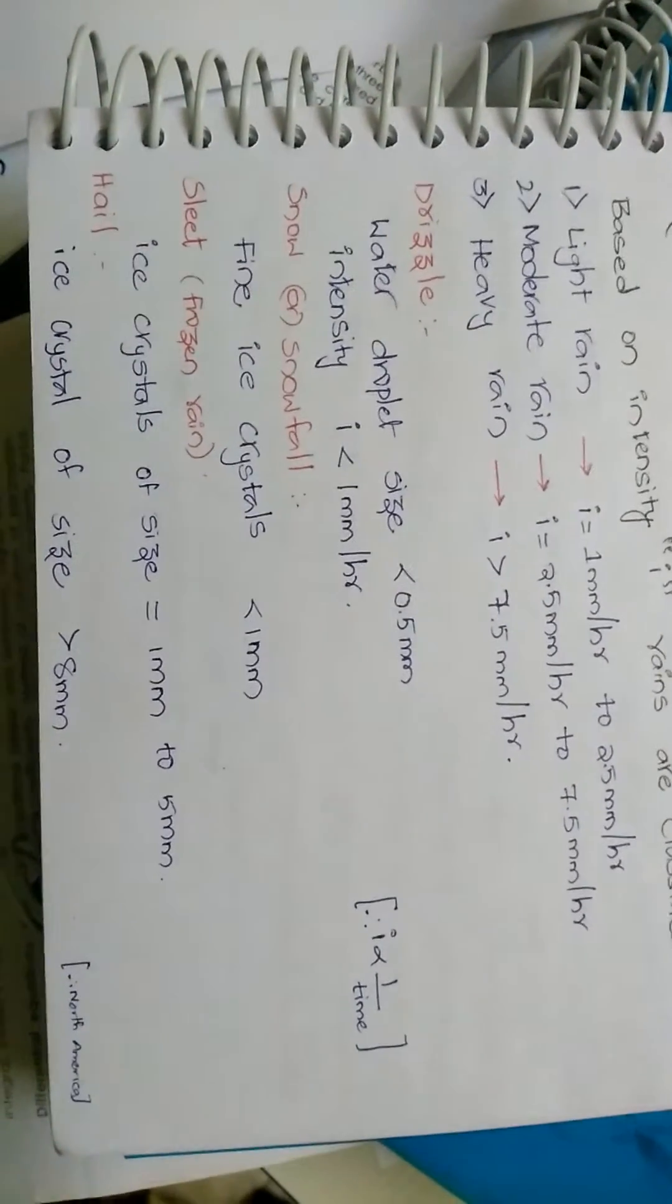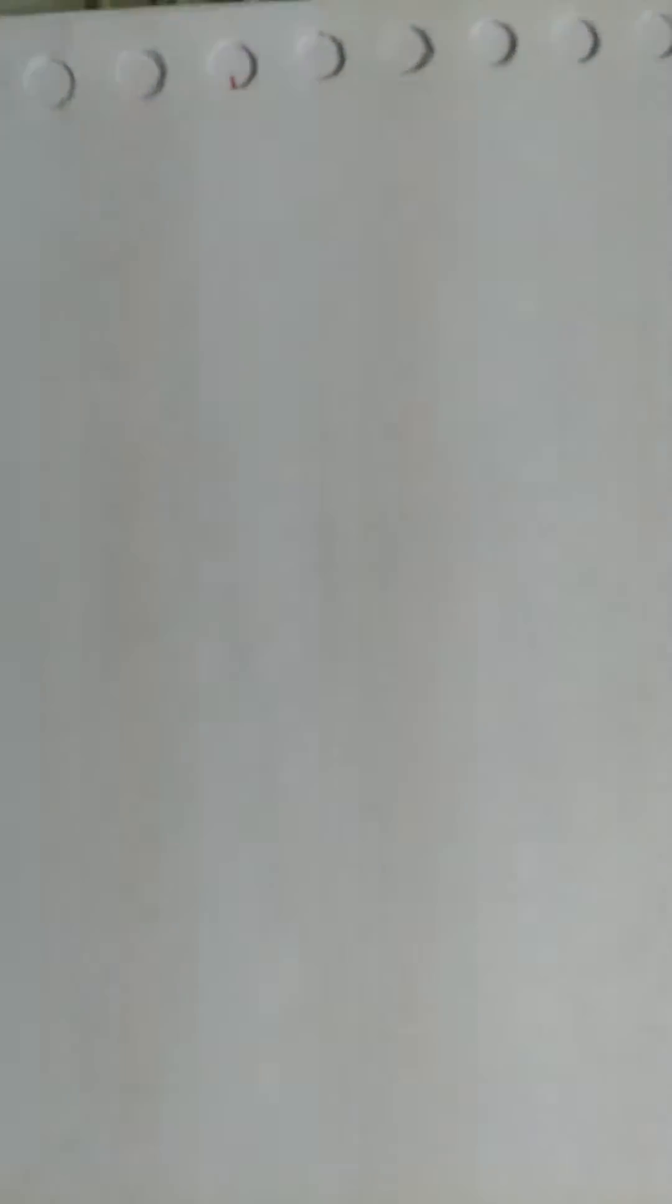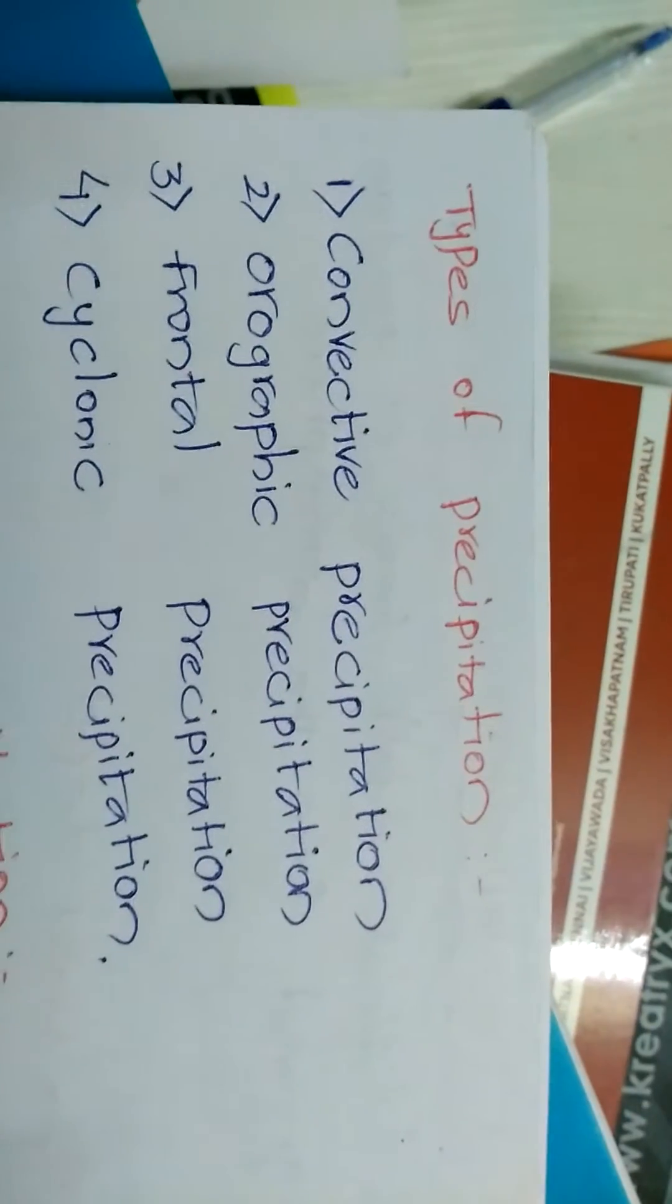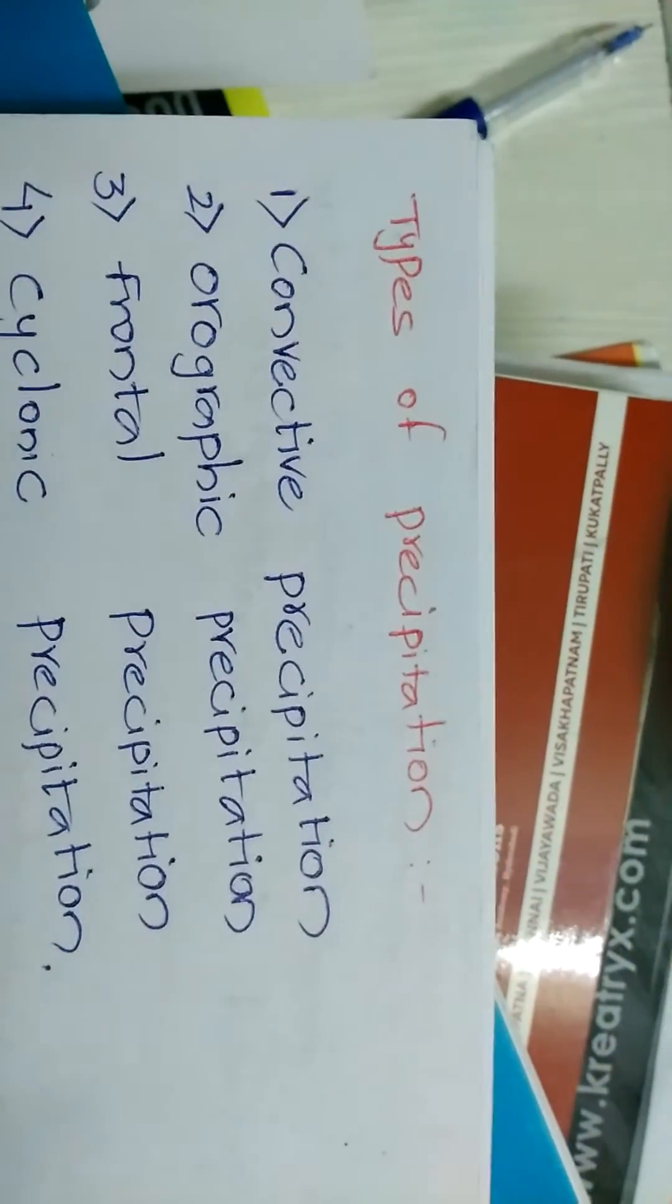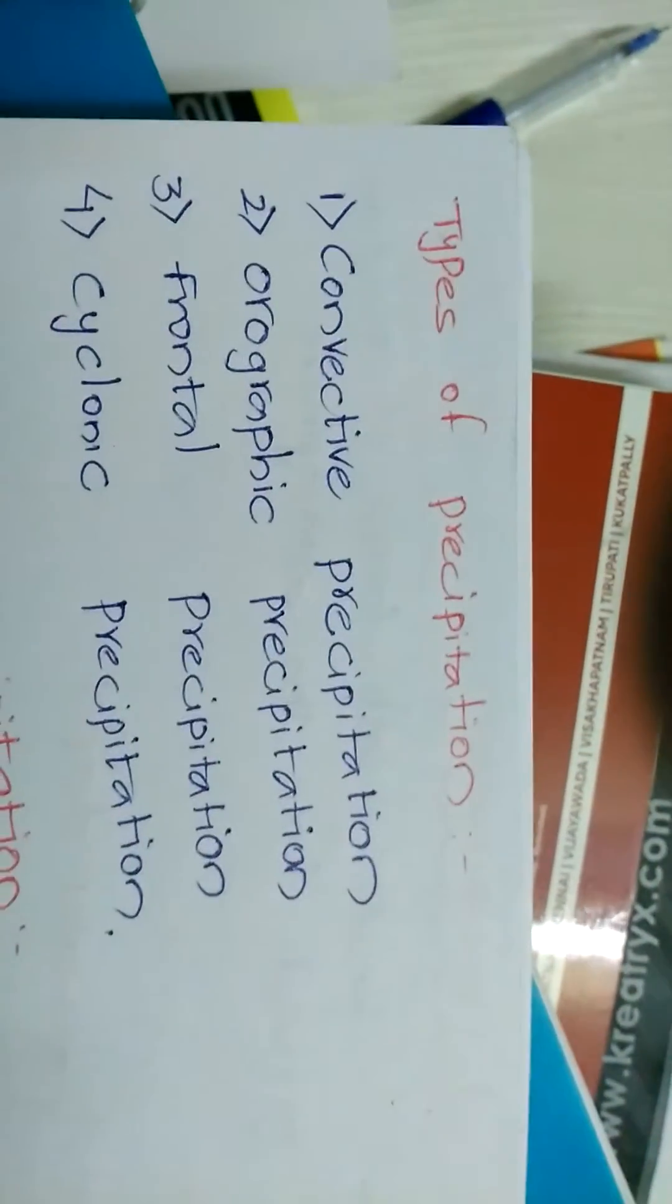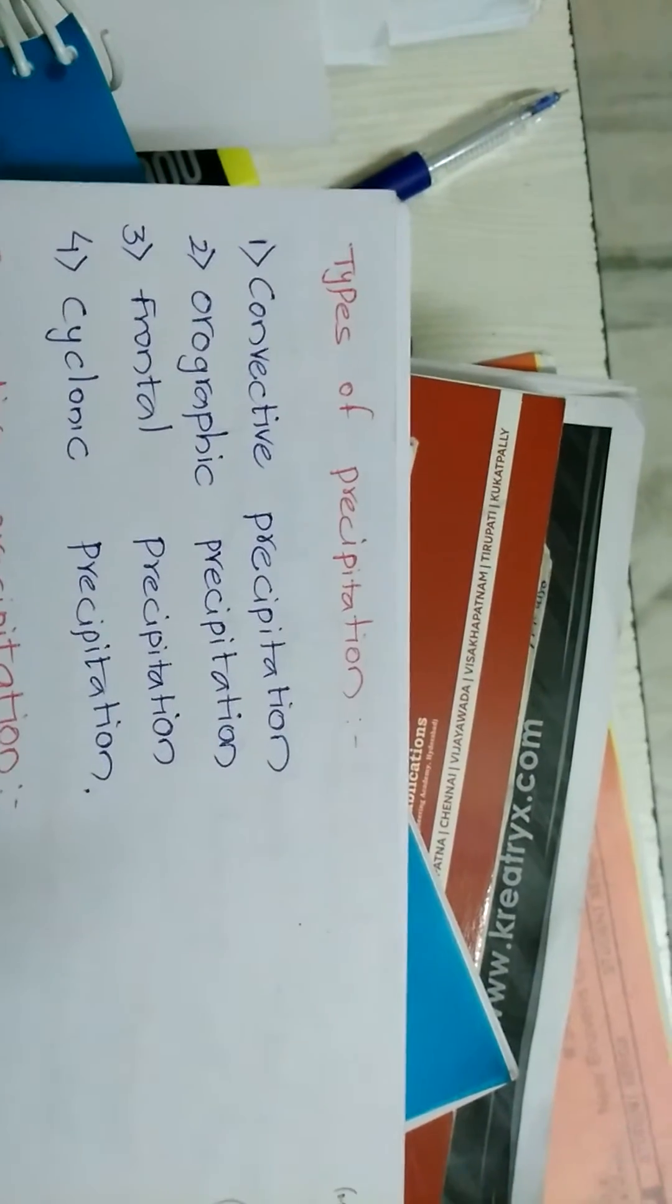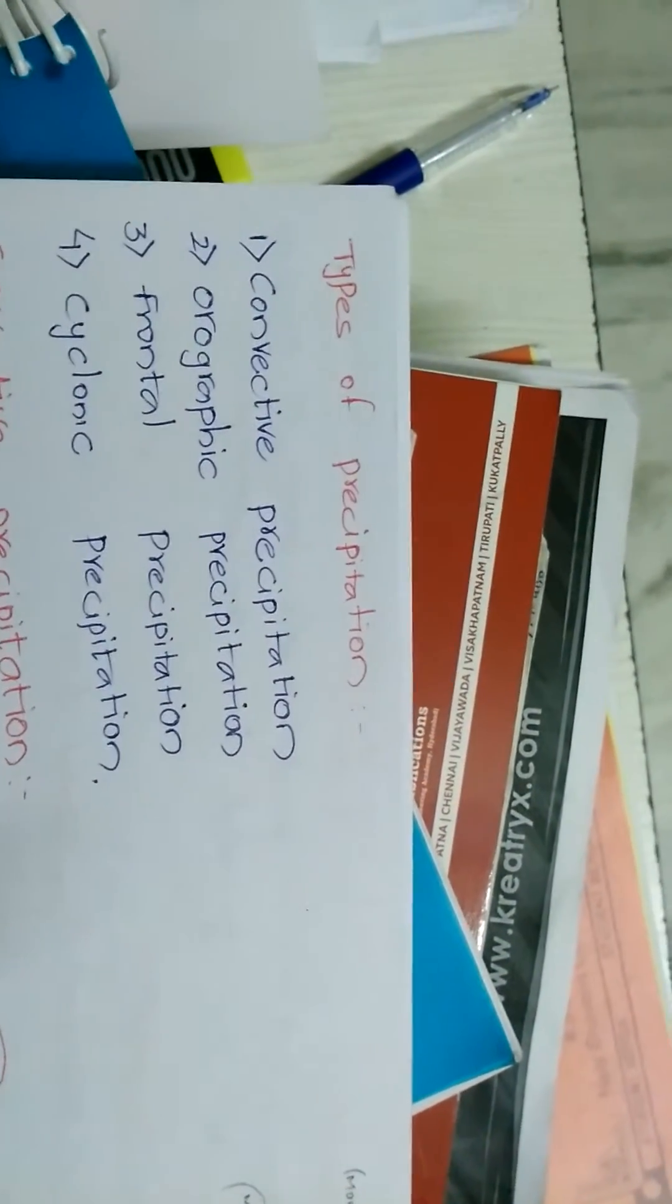Hail: ice crystals of size greater than 8.5 mm. Let me know about types of precipitation. Majorly there are 4 types of precipitation: convective precipitation, orographic precipitation, frontal precipitation, cyclonic precipitation.